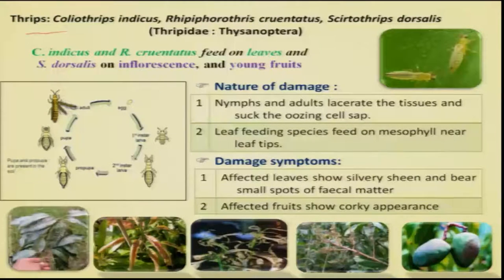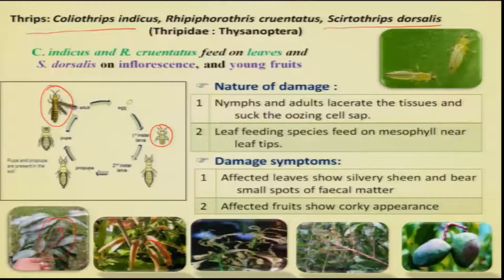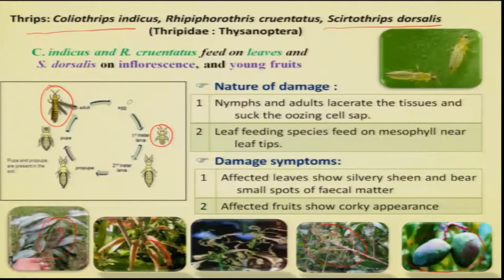Some species of thrips, especially Scirtothrips dorsalis and others, are also quite serious. Both nymphs and adults are the damaging stage and they attack all parts of the plant. On leaves, attacks produce a white silvery appearance, while younger leaves show bronzing and leaf drop. On inflorescence, attacks lead to poor fruit set. Most importantly, on fruits they scrape the skin, causing the affected part to develop a corky appearance, reducing market value.